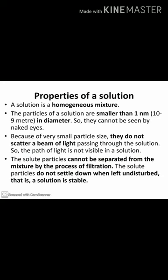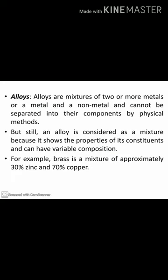Alloys are mixtures of two or more metals, or a metal and a non-metal. They cannot be separated by physical methods, but alloys are still considered mixtures because they show the properties of their constituents and can have variable composition. For example, brass is an alloy that is approximately 30% zinc and 70% copper.